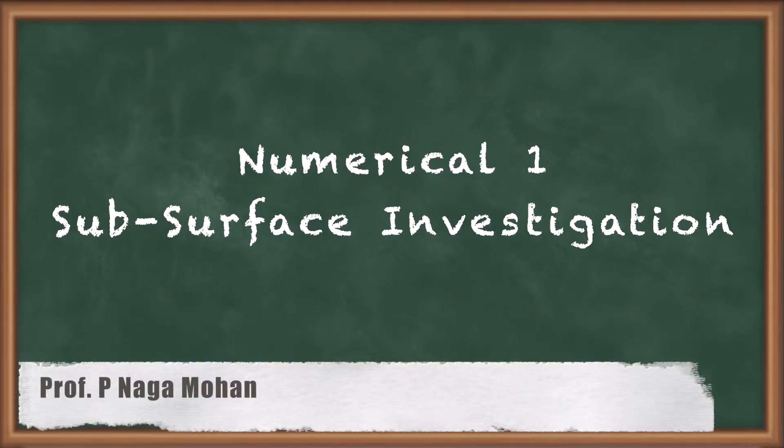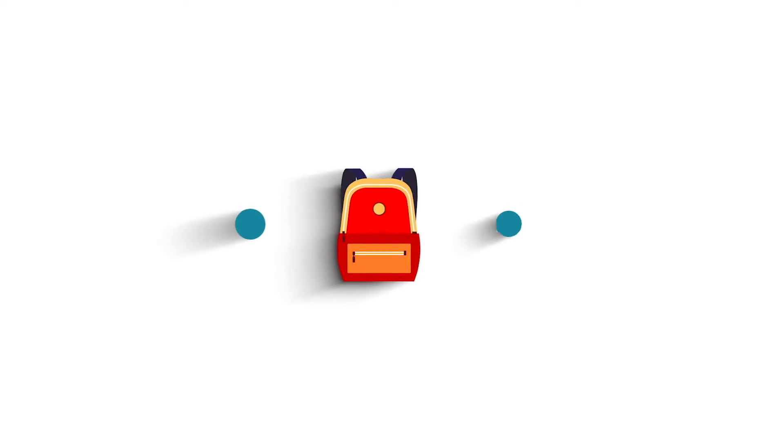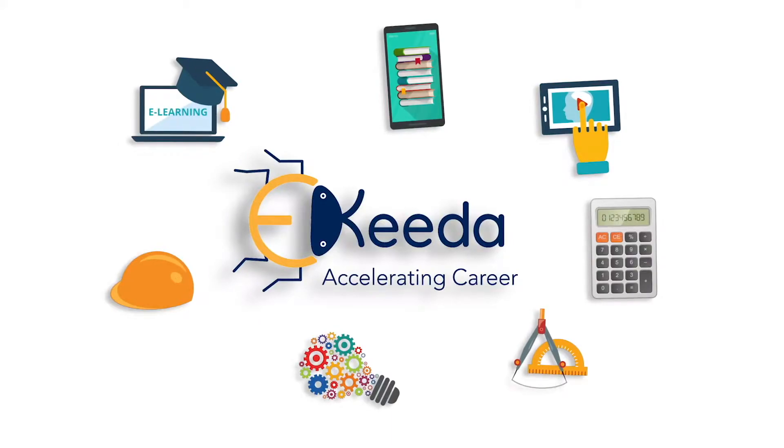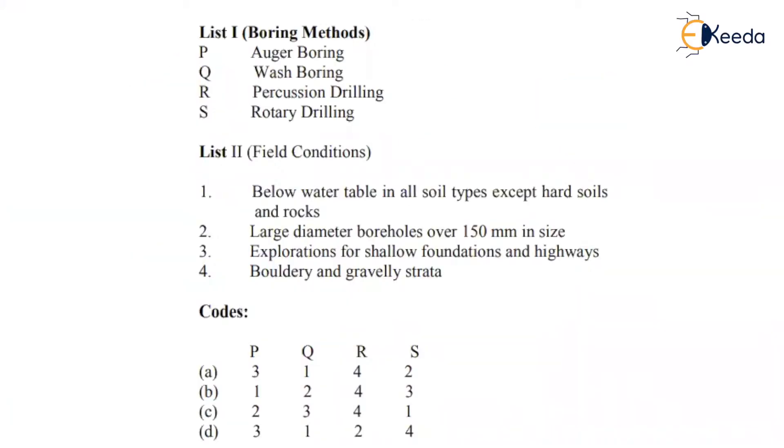Hello friends, let us see some previous GATE questions on this chapter. Most probably we may have theoretical questions like match the following, or we may have numerical type. In numerical type, mostly they will ask about inside clearance ratio, outside clearance ratio, and similar questions. As they are using direct formulas, let us see some theoretical questions.